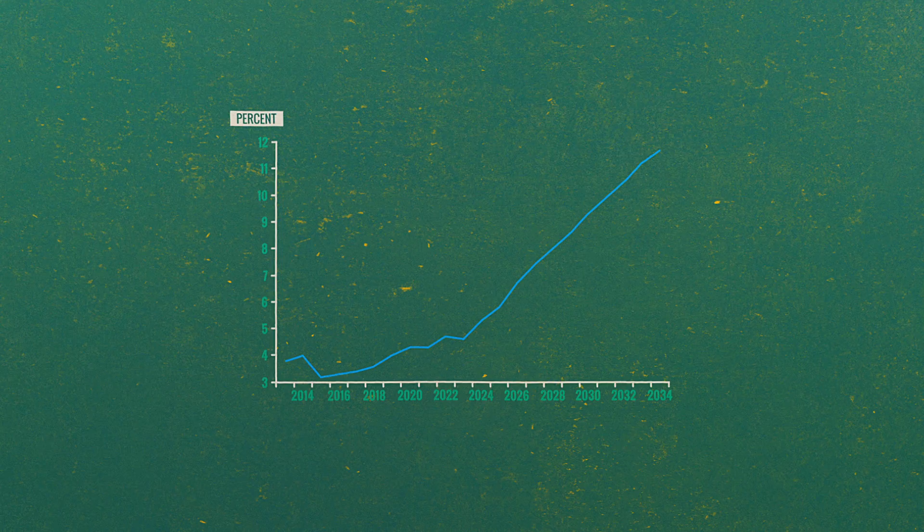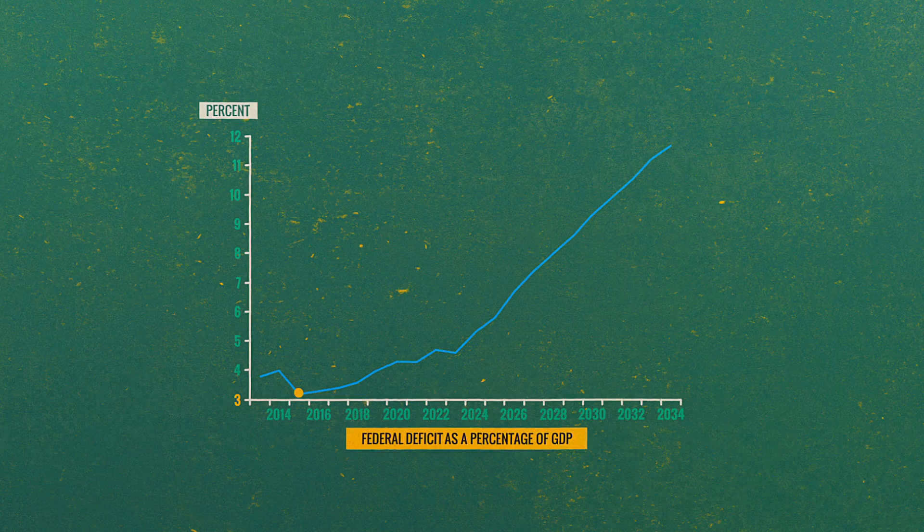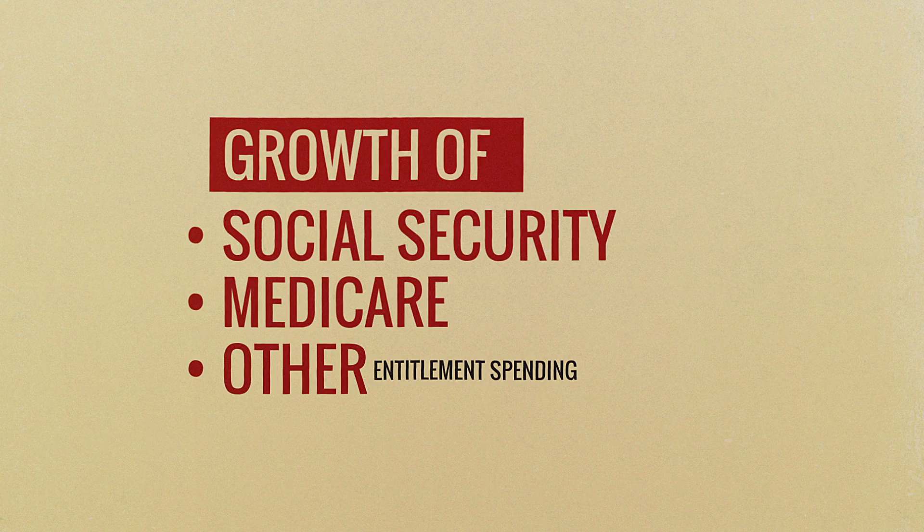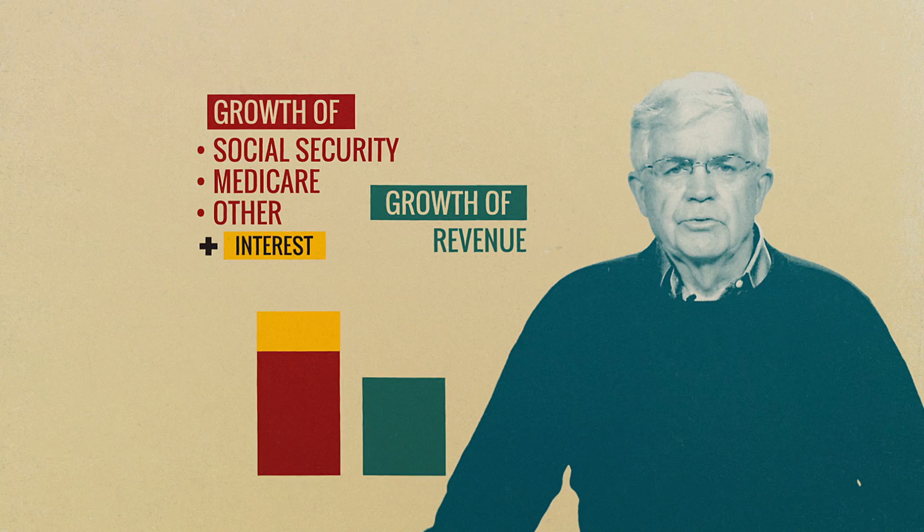The deficit — the difference between the blue and the green line — is now shown as a percentage of GDP. It's hovering around three or four percent currently, then it's expected to rise pretty dramatically up to almost 12 percent of GDP under current law if the law is not changed. A lot of that is because of the growth of Social Security, Medicare, and other entitlement spending growing more rapidly than revenue, plus rising interest payments.